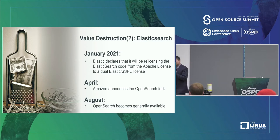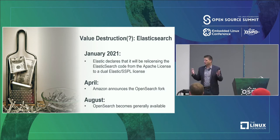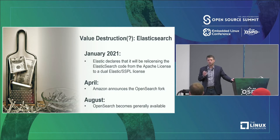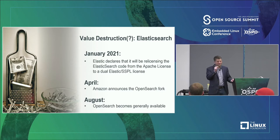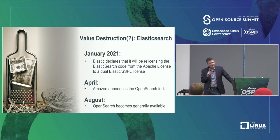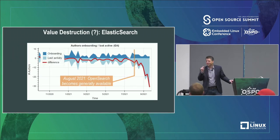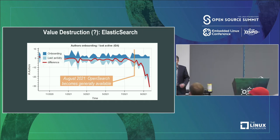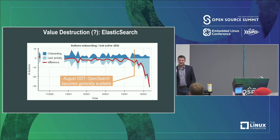One last one — and I've got a question mark here because it's not 100% sure this is happening. But in January of this year, Elastic said they're going to re-license Elasticsearch from Apache to various proprietary licenses. Amazon announced they were going to fork, and in August — August 6th or 8th — OpenSearch became generally available. I've got an orange line on the next slide showing the date when OpenSearch became generally available. What you're seeing is the rate of retention of people who create issues. Maybe this won't continue — maybe this is a blip — but that strikes me as one of those eight-weeks types of situations that someone will be referring to years down the road.